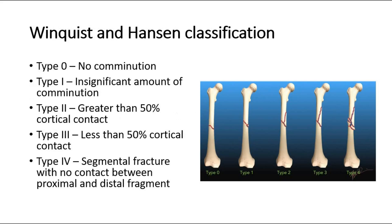For classification of femur fractures, the Winquist and Hansen classification can be used. Type 0: no comminution. Type 1: insignificant amount of comminution. Type 2: greater than 50% cortical contact. Type 3: less than 50% cortical contact. And lastly, Type 4: segmental fracture with no contact between proximal and distal fragment.